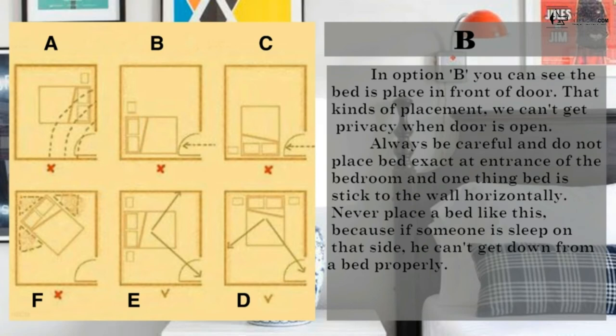So let's come to option B. In option B, you can see the bed is placed in front of door. That kind of placement, we can't get privacy when door is open. Always be careful and do not place bed exactly at the entrance of the bedroom. And one thing, bed is stuck to the wall horizontally. Never place bed like this, because if someone sleeps on that side, he can't get down from the bed properly.